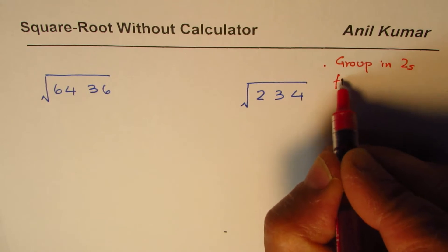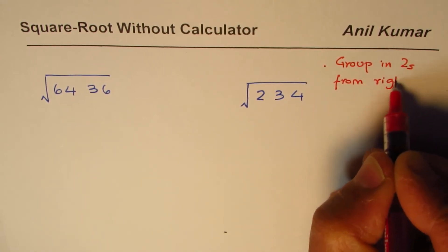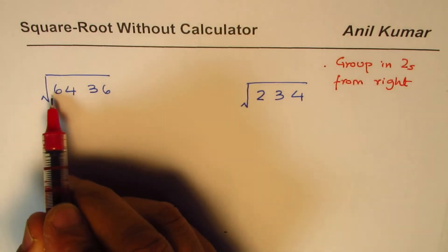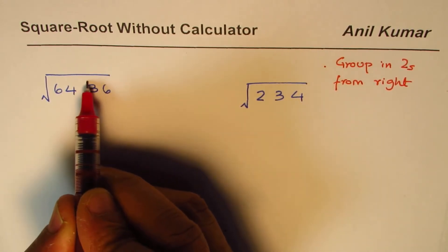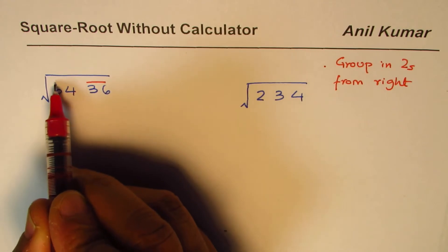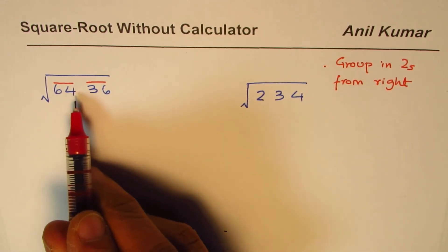The confusion is how do we group, from left or from right? So the answer is from right. If we have four numbers, start from the right side, groups of two.